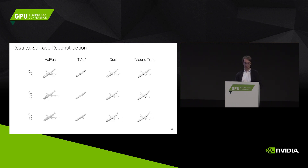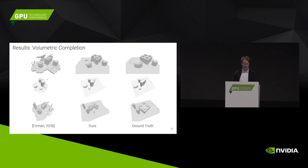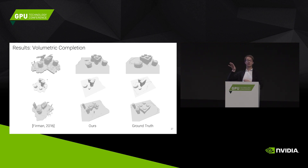Here are some results for an airplane example. The rows show different resolutions, and the columns show the volumetric fusion approach (very noisy), the TV-L1 approach (less noisy but missing details), our reconstruction, and the ground truth. We can also do 3D surface completion: given ground truth for a full 3D model but observations from only one camera, we need to reason about occluded regions. In this case our approach does a better job than the baseline, though there's still some deviation to the ground truth in the occluded regions because it's essentially guessing.